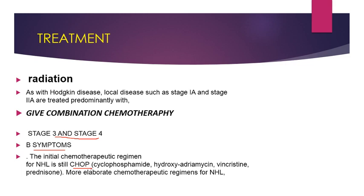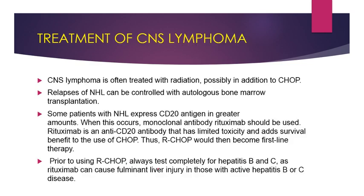For Hodgkin's Lymphoma the regimen was ABVD, but for Non-Hodgkin's Lymphoma the chemotherapeutic regimen is CHOP: Cyclophosphamide, Hydroxy-Adriamycin, Vincristine, and Prednisone. For CNS lymphoma, if the CNS is involved, treatment is mostly radiation in addition to CHOP. Relapses of Non-Hodgkin's Lymphoma can be controlled with autologous bone marrow transplantation.